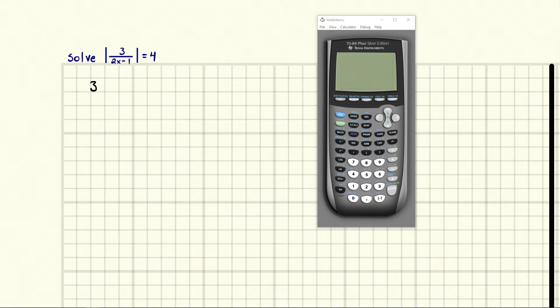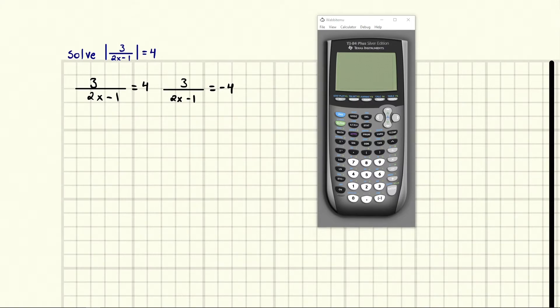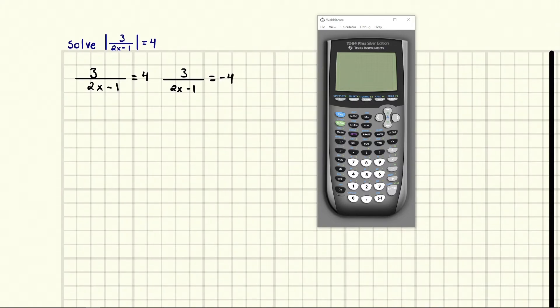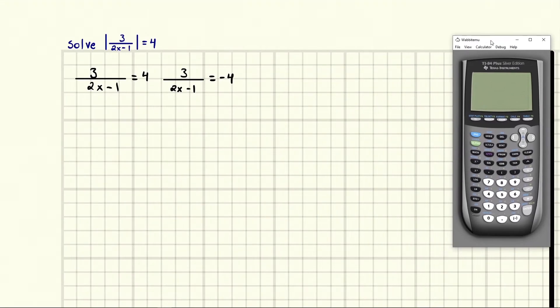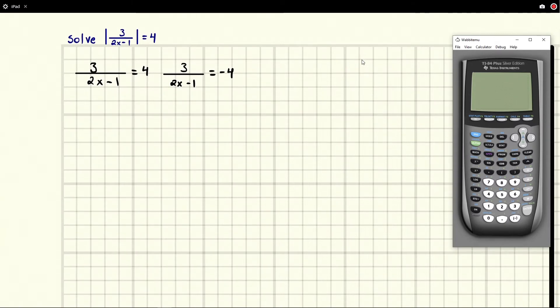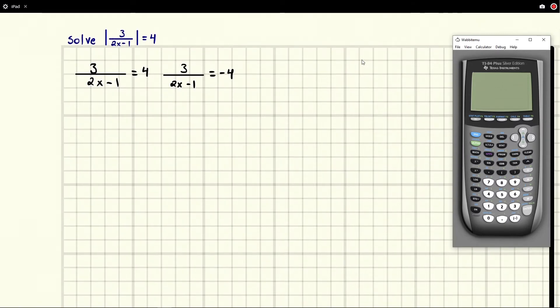We're going to have 3 over 2x minus 1, and there's going to be the case where it's equal to positive 4, and there's also going to be the case where we take this 3 over 2x minus 1 and it's equal to negative 4. So these are our two cases. Let me go ahead and move this calculator out of the way. Let's solve the positive case first.